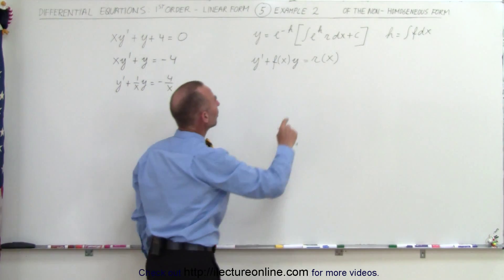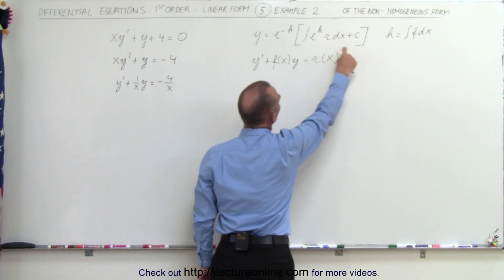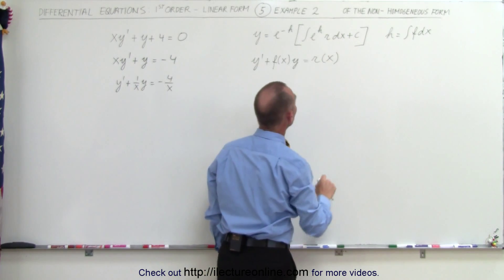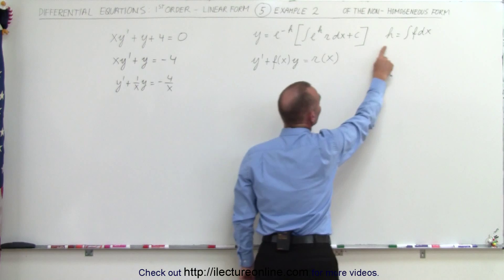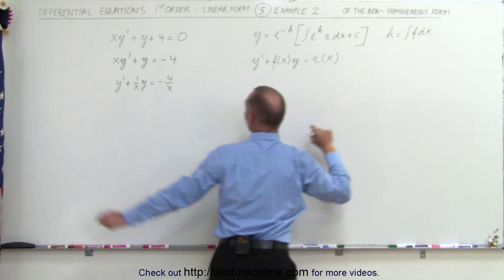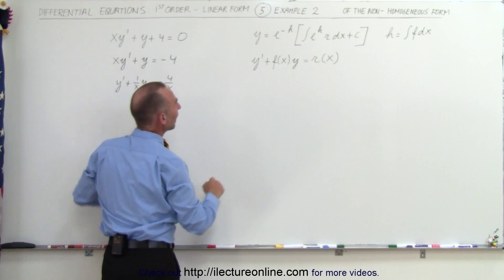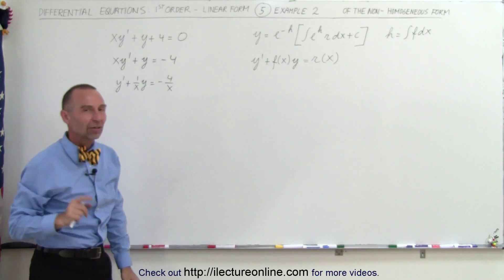Now, looking at the right here, we can see that this is the general form of the equation's solution. Realizing that h in the equation is equal to the integral of f dx, f of course is the function of x in front of the y, and r is the minus 4 over x in this case.